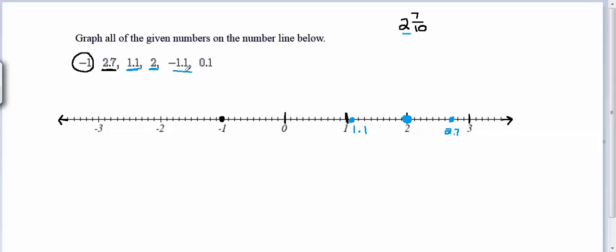To graph the number negative 1.1, we go backwards from 0, 1, and then 1 more tenth. So again, we'll need to draw 9 little lines in between negative 1 and negative 2, creating 10 spaces, and then go to the first of those little lines, which would give us 1 tenth more away from 0. So there would be negative 1.1.